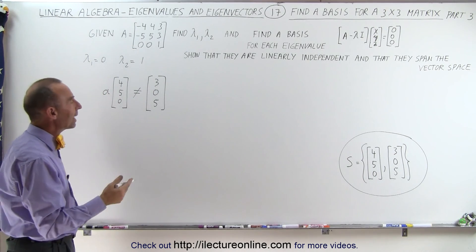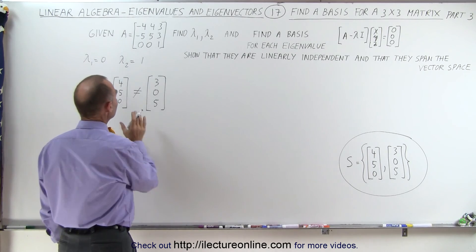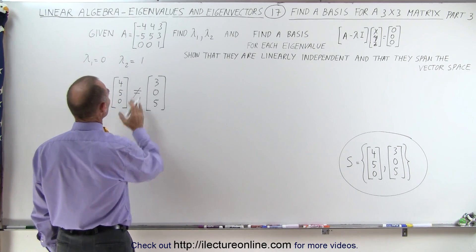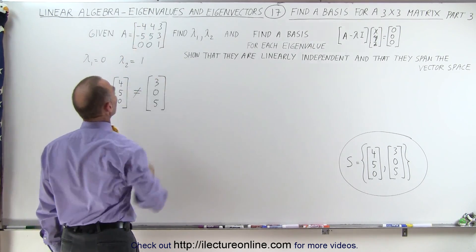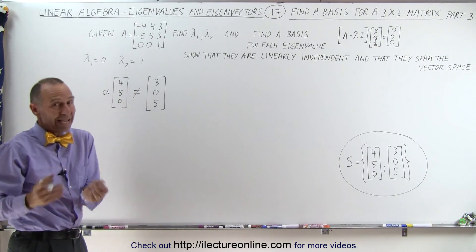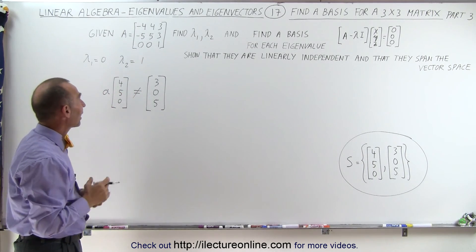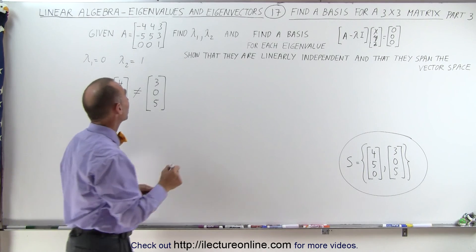But now how do we show that they span the vector space? Can we take a combination of these two vectors and obtain each of the three columns? And the answer should be yes if those two eigenvectors span the space. So let's see that.